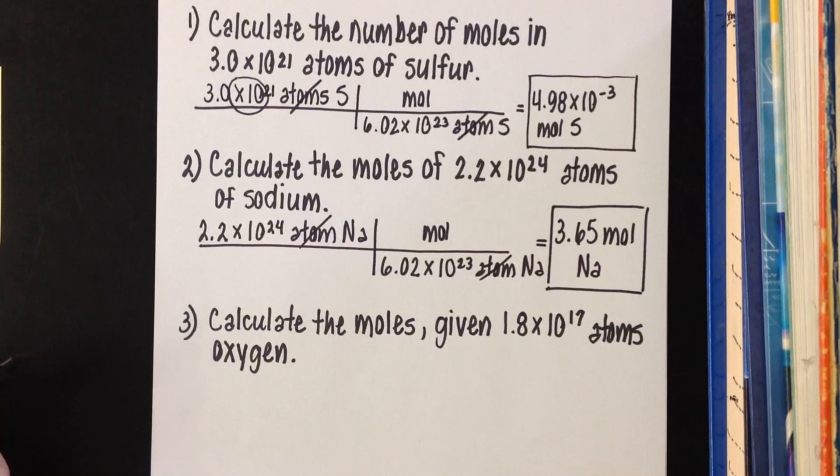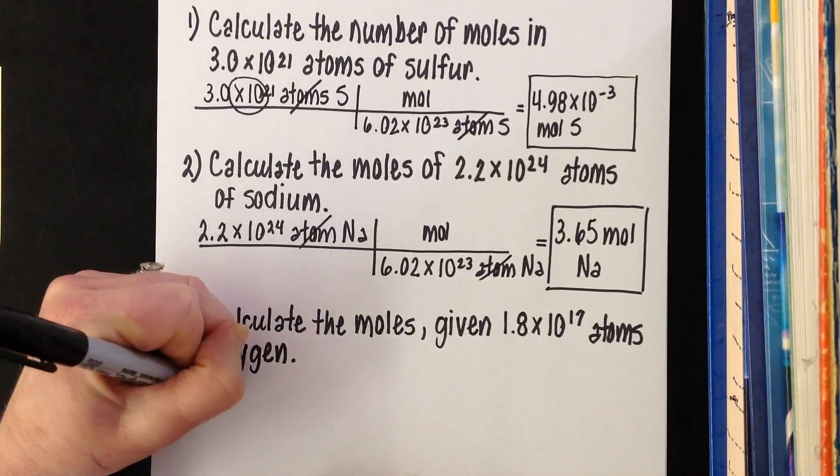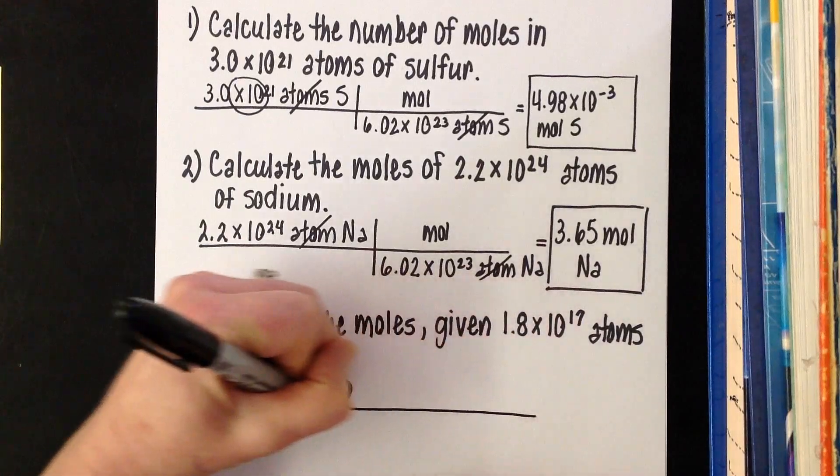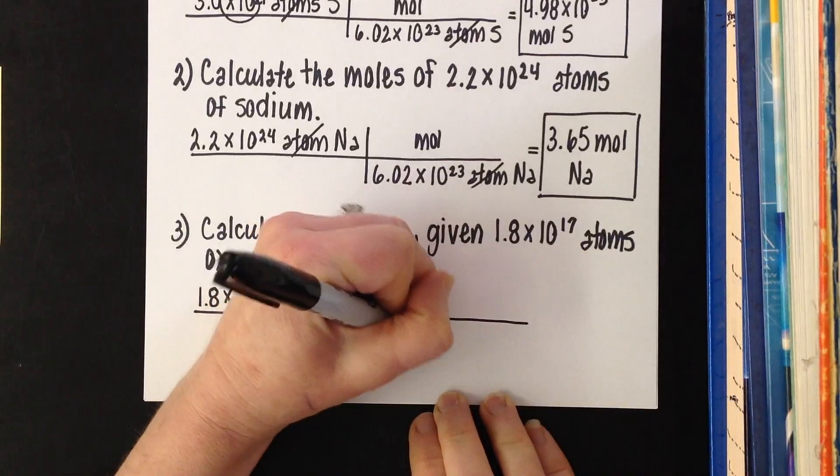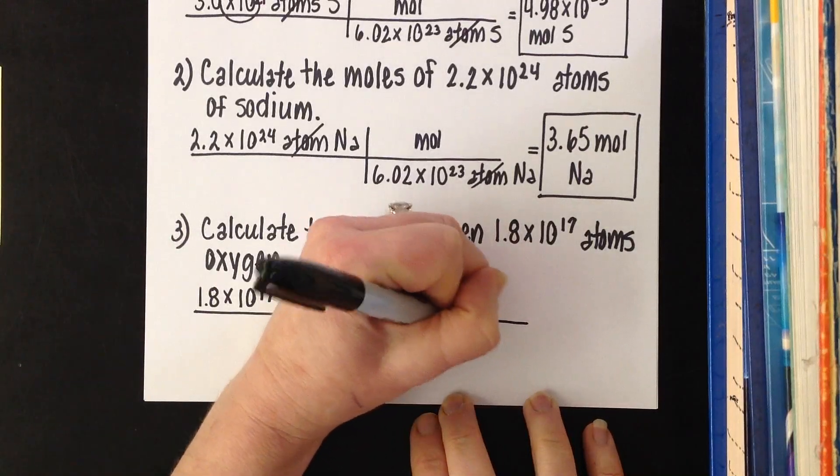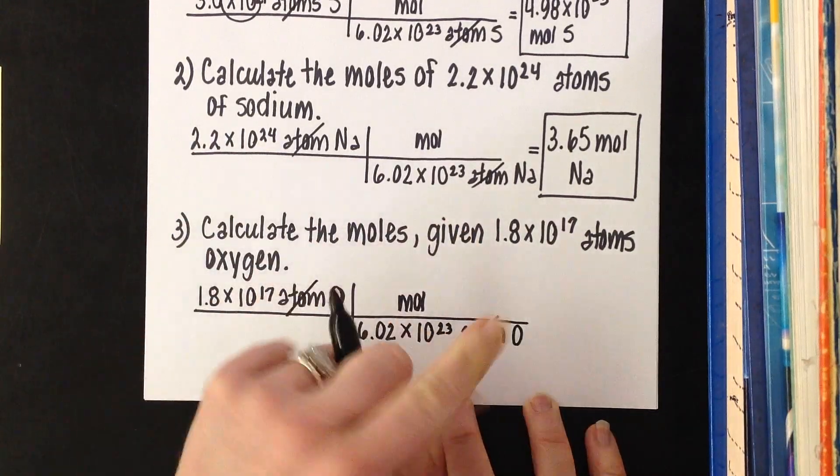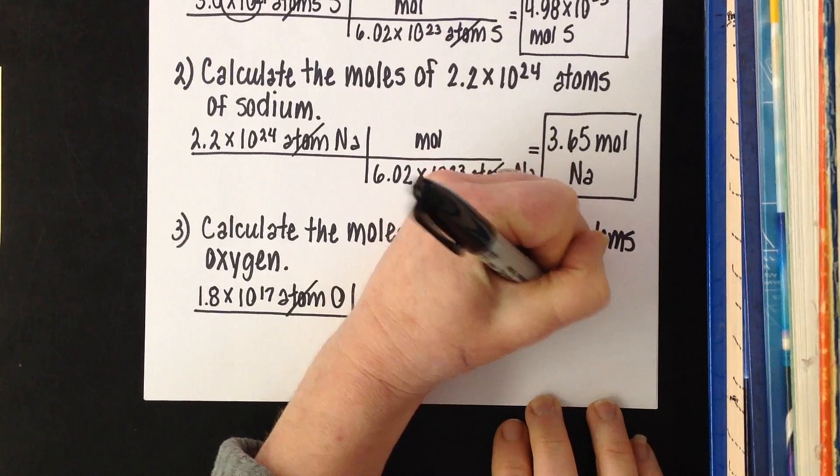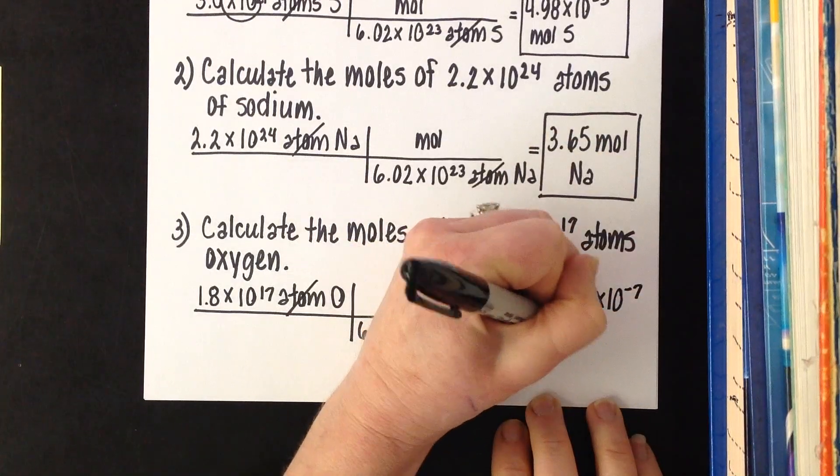And the last one. Calculate the number of moles if you're given 1.8 times 10 to the 17th atoms of oxygen. Long line, short line. We know there are 6.02 times 10 to the 23rd atoms of oxygen per mole. Atoms cancel on the diagonal top to bottom. Divide those two numbers. 1.8 times 10 to the 17th divided by 6.02 times 10 to the 23rd. This is such good practice on working with those exponents. 2.99 times 10 to the negative 7.